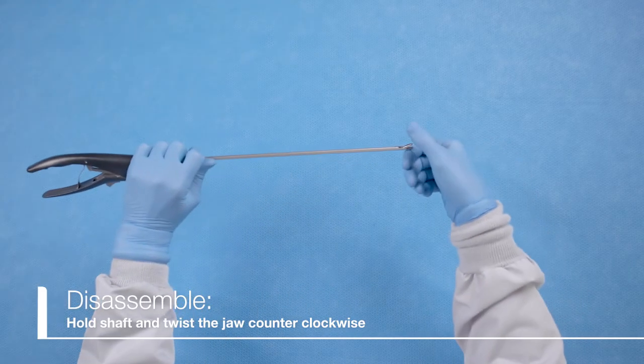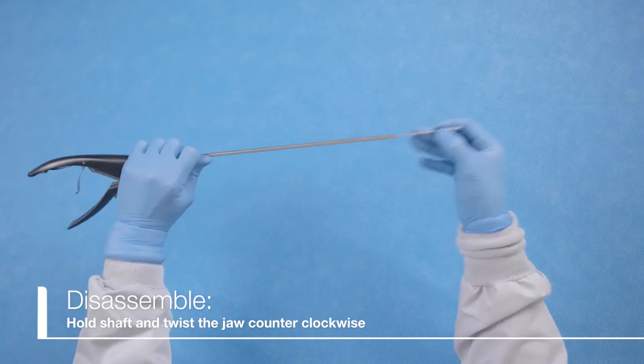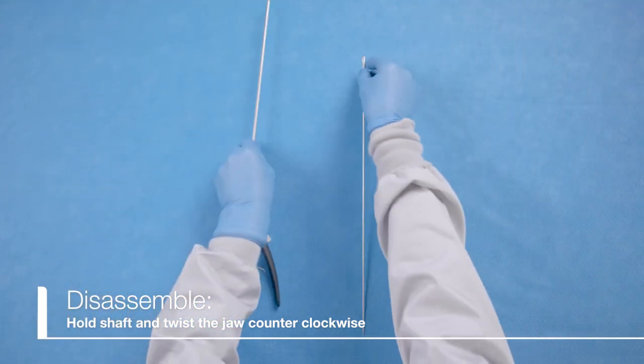In order to disassemble the needle holder instrument, hold the shaft and twist the jaw in a counterclockwise fashion.